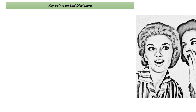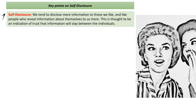What is self-disclosure? Self-disclosure is when an individual reveals information about themselves to another person. We as individuals tend to disclose more information to those people that we like, and we also like people who reveal more information about themselves to us. The reason for this is that to disclose information to someone — especially information that is personal, that you don't want to put out to other people — is an indication of trust with that person; trust that the information you give to them will stay between you two.